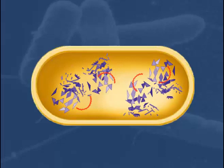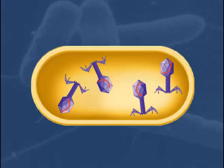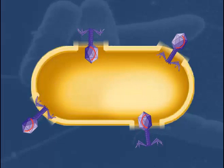The newly made capsid proteins and phage DNA molecules assemble into a new generation of phage particles and the cell is lysed, releasing the mature phage particles.